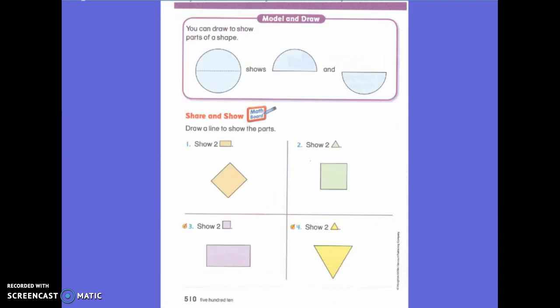So now I want to show this and this in my circle. So where am I going to draw my line to show these two shapes? Middle. Down the middle. So do you see this line, this over here and this over here? Very good.